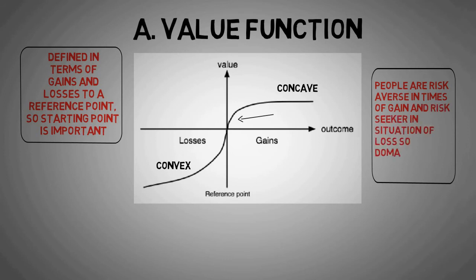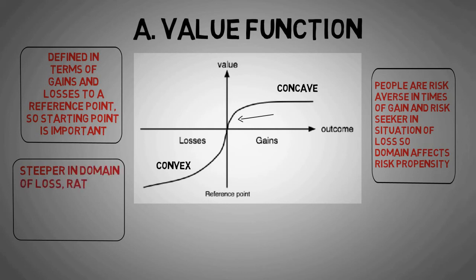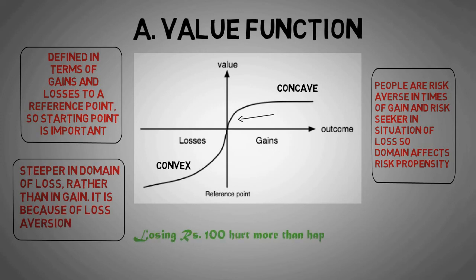The asymmetric nature of value curve - it is steeper in domain of loss rather than in gain. It is because of loss aversion - that is, losing rupees 100 hurts more than happiness in finding rupees 100.